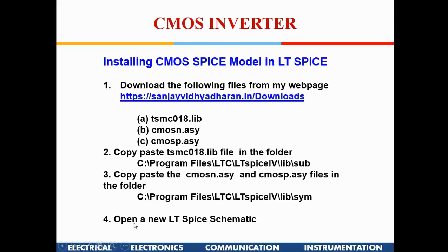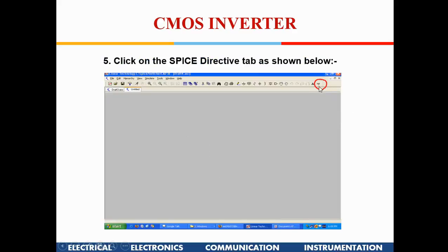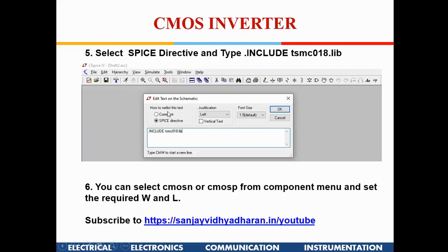Once you have downloaded these three files from the web page and pasted them in the correct locations, open a new LTSpice schematic. On the top right you will find a small SPICE Directive button. Press that and a window opens up. Type '.include tsmc018.lib' — this is the SPICE directive telling LTSpice to include this library.